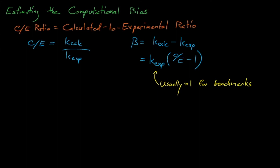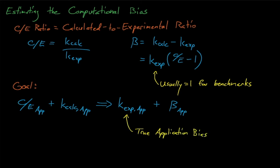Estimating C over E's for our target application is our goal in validation studies, since these C over E's allow us to estimate the code's computational bias for some application, and by extension allows to estimate the application's true K effective. So how do we estimate these C over E's? We'll discuss several statistical methods for estimating the C over E's in the coming lectures, but in general we estimate the C over E value for a target application using a statistical analysis of C over E's for similar benchmark experiments.